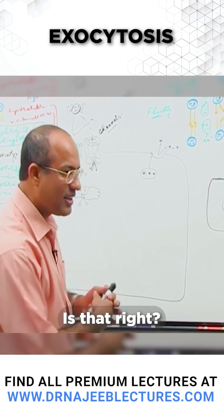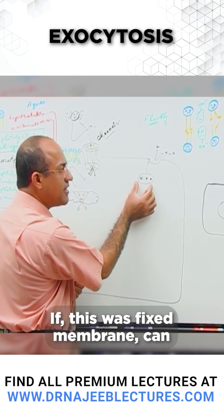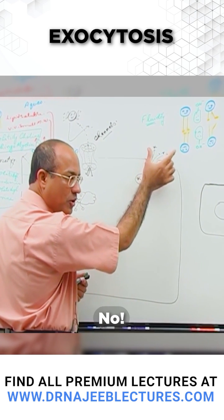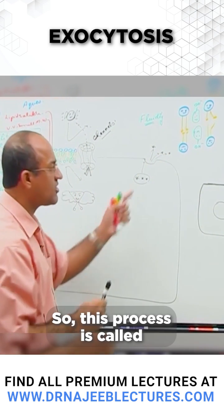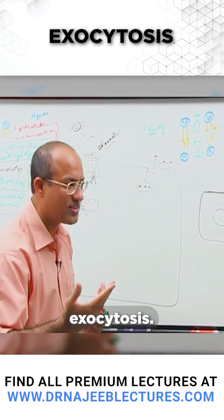Is that right? If this was a fixed membrane, can it easily go out? No. This process is called exocytosis.